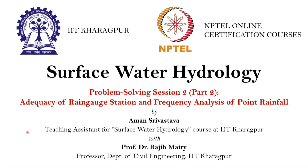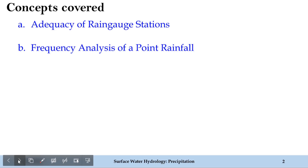Welcome to the second part of the problem-solving session for week 2 for the course Surface Water Hydrology. It has been taken by Professor Dr. Rajip Meuthi from the Department of Civil Engineering, IIT Kharagpur. I am the TA Amit Srivastava, and today in this session we will be focusing on solving numerical problems on adequacy of rain gauge stations and frequency analysis of point rainfall. Let's see these two parts.